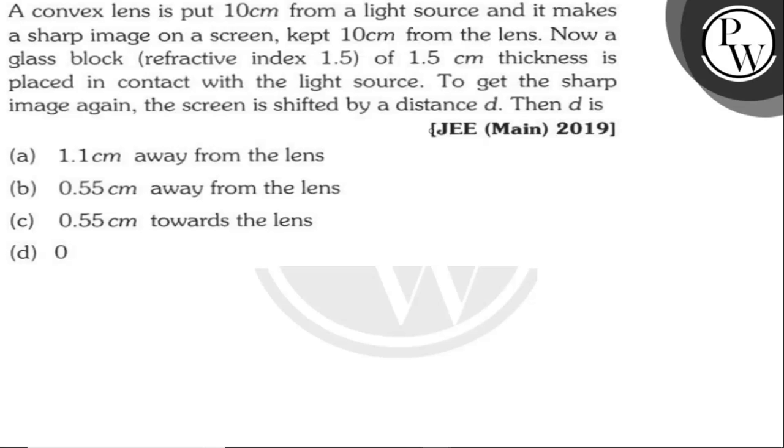Hello Ucchot, our question is: a convex lens is put 10 cm from a light source and it makes a sharp image on a screen 10 cm from the lens.